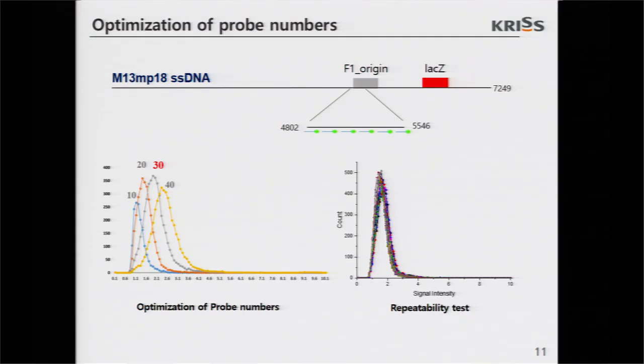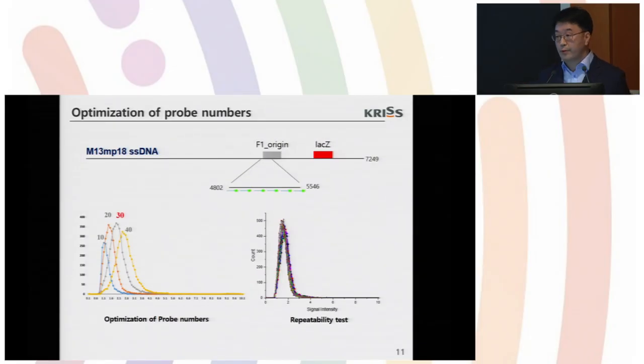We used fluorescent TAC probes for sequence-specific counting. In Korea, one probe is about more than $100. So it is better to use smaller numbers of probes as long as the quantification quality is maintained. So we test numbers of probes on M13 single-strand DNA as a model sample. You can see number-dependent fluorescent signals here. And we thought 30 probes will be sufficient for our sequence-specific counting of DNA. And you can see repeatability of our condition.